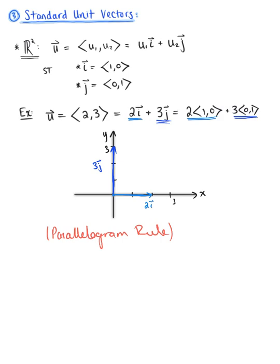Using the parallelogram rule, we have 2î, and starting at that terminal point we add 3ĵ. We draw that parallel vector since position is irrelevant. Then to see the sum, we start at the origin and draw the directed line segment along the main diagonal of that parallelogram. Looking at the result, we have an x-component of 2 and a y-component of 3, which equals the original vector u.